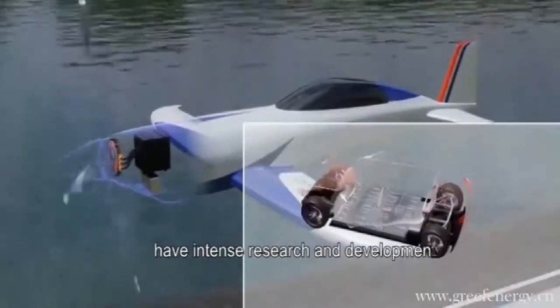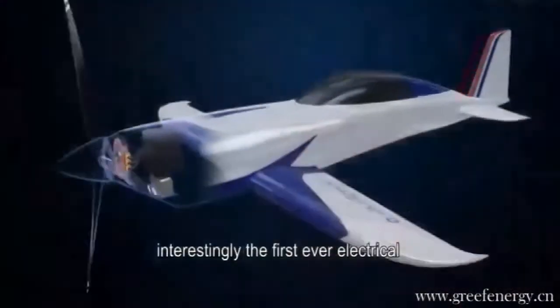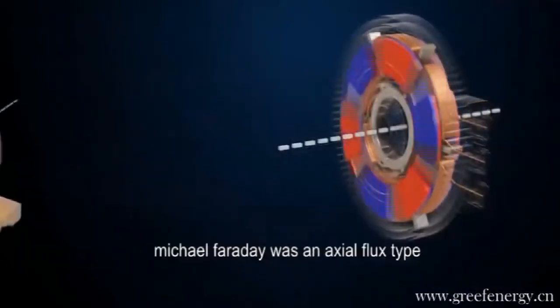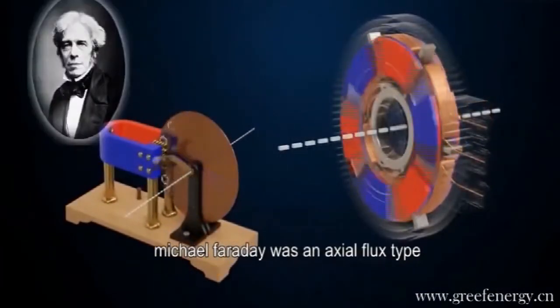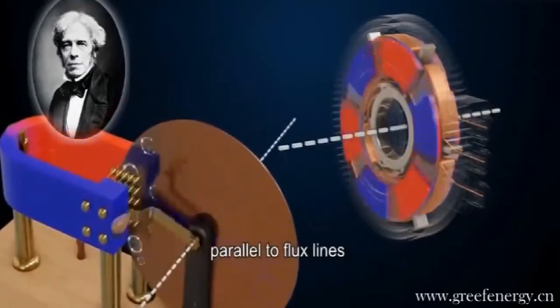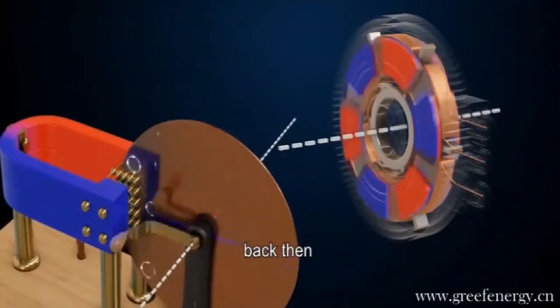Companies like Rolls-Royce and Magnex have intense research and development in progress on these motors. Interestingly, the first-ever electrical generator, developed by the genius Michael Faraday, was an axial flux type. You can see the axis of rotation is parallel to flux lines. However, it never got its day in the sun back then.